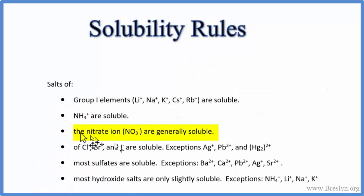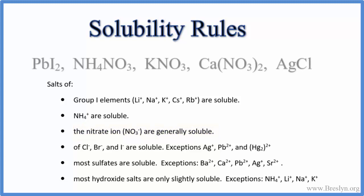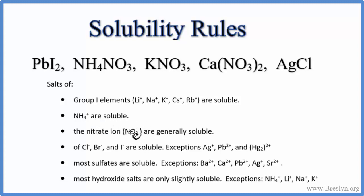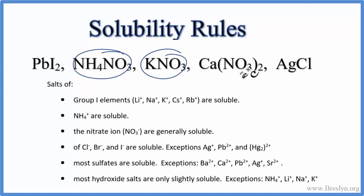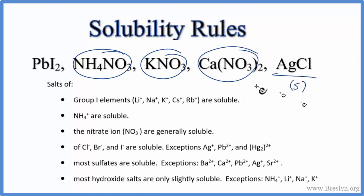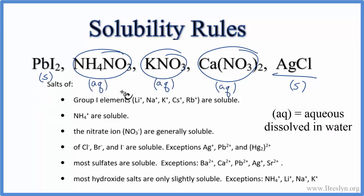For our next rule, the nitrate ion, NO3-, is generally soluble. Pause and determine which of these are soluble. Anything with the NO3- nitrate ion should be soluble: ammonium nitrate, potassium nitrate, and calcium nitrate are all soluble. You might remember AgCl — that's not soluble, we'd write S for solid after that. PbI2 is also not soluble. For the soluble compounds, we write Aq for aqueous.